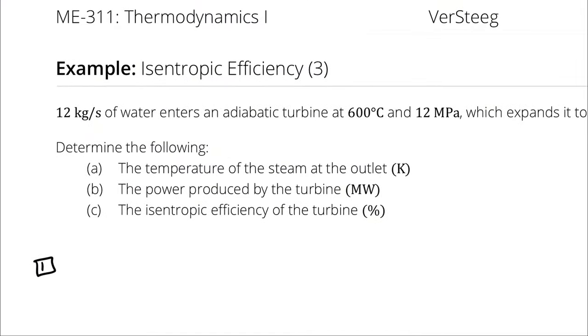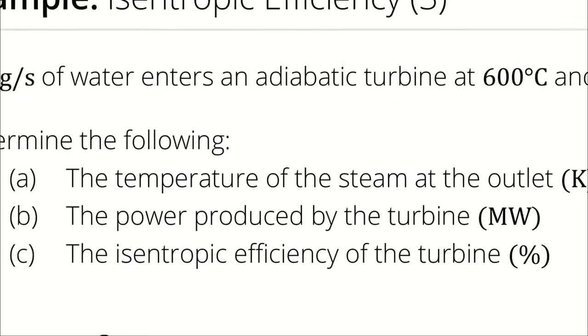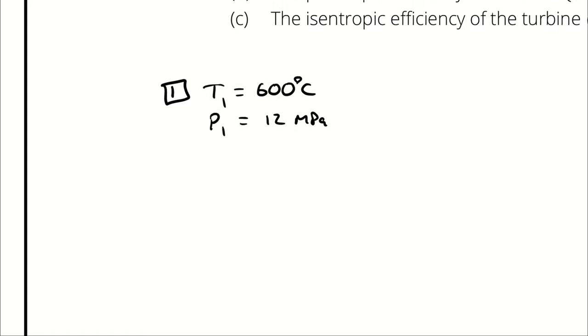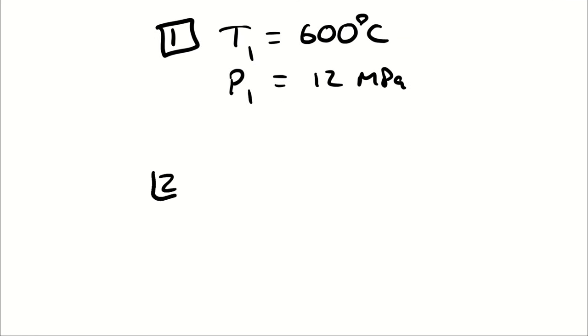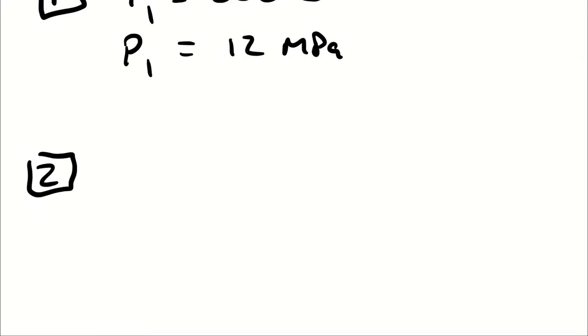I'm going to start by identifying state points. I have state 1, which is the actual inlet conditions. I have a mass flow rate of 12 kilograms per second and a temperature of 600 degrees Celsius. Furthermore, I know the pressure at state 1 is 12 megapascals. Then I have state 2, where my pressure is 5 kilopascals. And I was told it expands to a saturated vapor, so x2 is going to be 1.